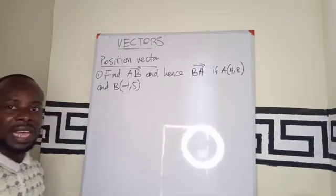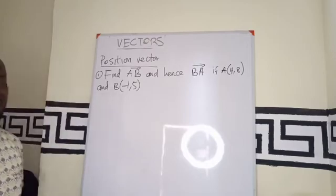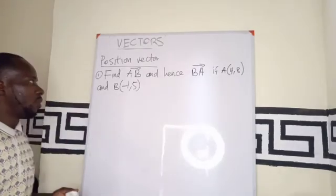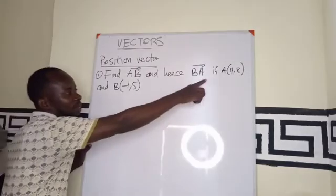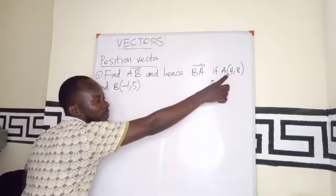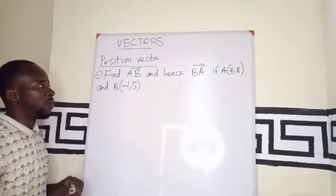We are asked to find vector AB and then continue to find vector BA. So we want to rewrite the vector form of A and the vector form of B.